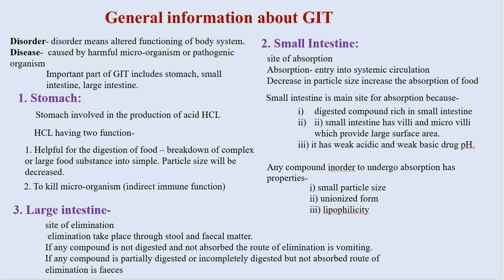The important parts of the GIT include the stomach, small intestine, and large intestine. The stomach is involved in the production of HCl. HCl has two functions: first, it is helpful for the digestion of food — it breaks down complex molecules or large food substances into simpler ones, decreasing particle size. Second, it kills microorganisms. This is the indirect immune function of hydrochloric acid.